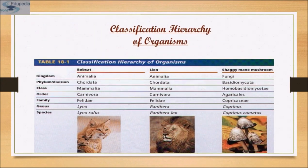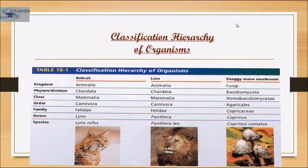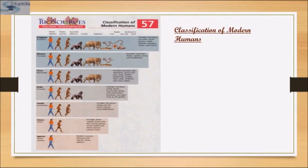This is the classification hierarchy of organisms. Taking a bobcat as an example: Kingdom Animalia, Phylum Chordata, Class Mammalia, Order Carnivora, Family Felidae, Genus Lynx, and Species Lynx rufus. Likewise, similar hierarchies apply to lion and shaggy mane mushroom. The classification of a modern human shows Homo sapiens, along with homo erectus, gorilla, elephant, fish, snake, earthworm and snail across the levels of kingdom, phylum, class, order, family, genus and species.